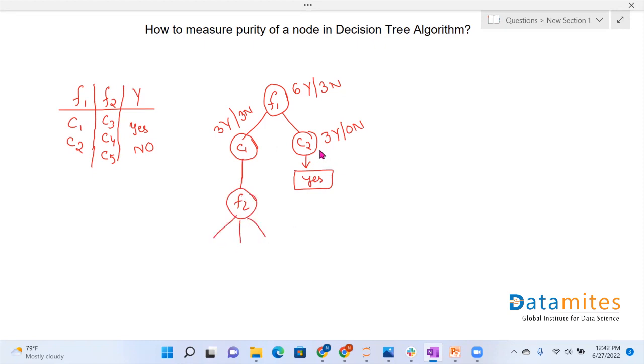This node is known as pure node as it doesn't require further splitting. This node is impure node as it requires further splitting. Now let's understand how we'll decide that it is a pure node or impure node. This we have seen visually. Now mathematically, we can understand this with the help of two concepts. First is entropy and second is Gini impurity.